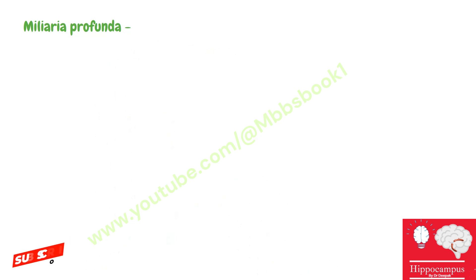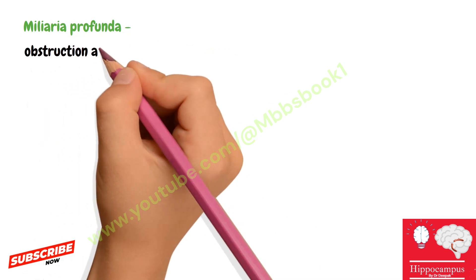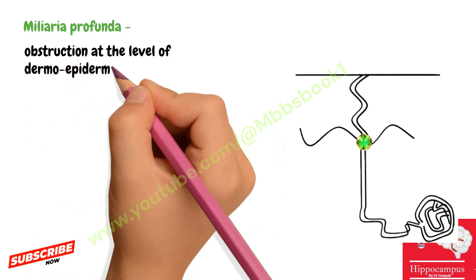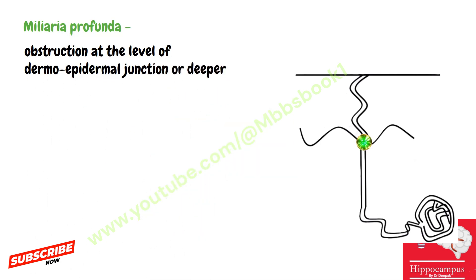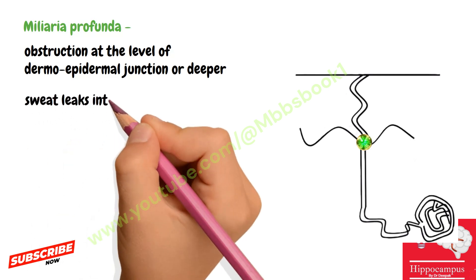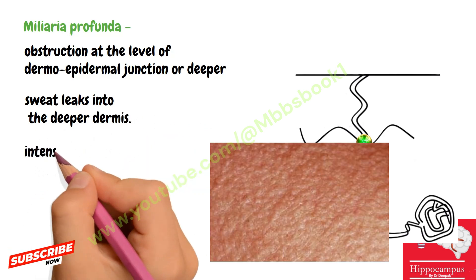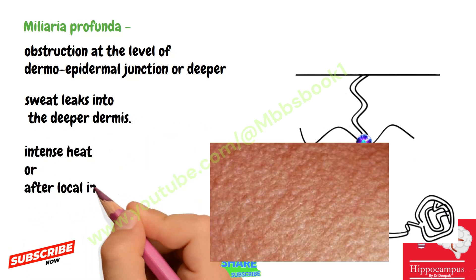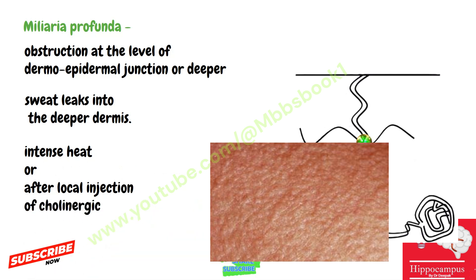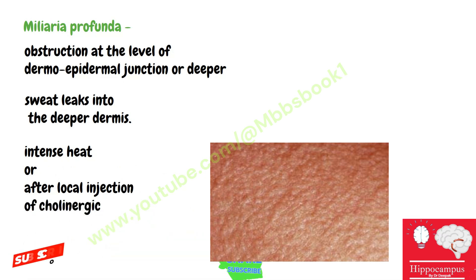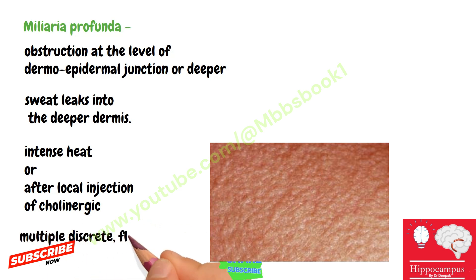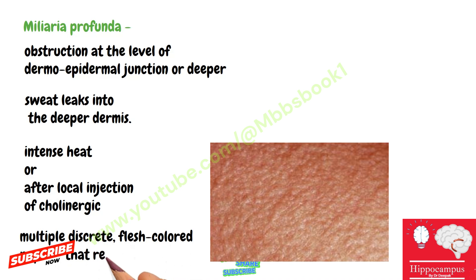The last type is miliaria profunda — profunda means deep. If there is obstruction at the level of the dermo-epidermal junction or deeper, this is called miliaria profunda. The obstruction results in sweat leaking into the deeper dermis, which is due to intense heat or after local injection of cholinergic agents. The affected skin can be uniformly covered with multiple discrete flesh-colored papules that resemble goose flesh.